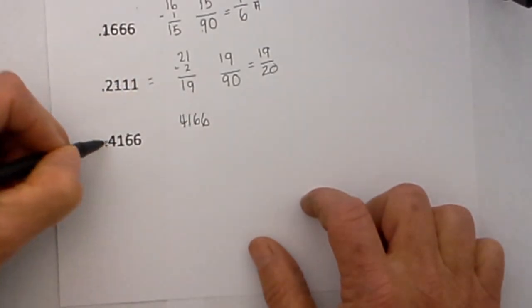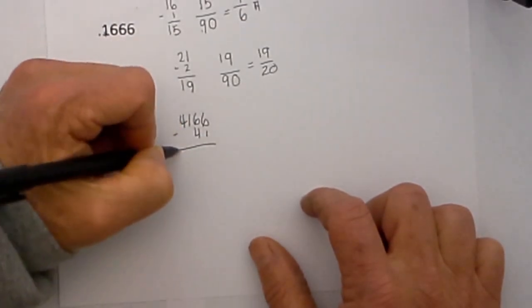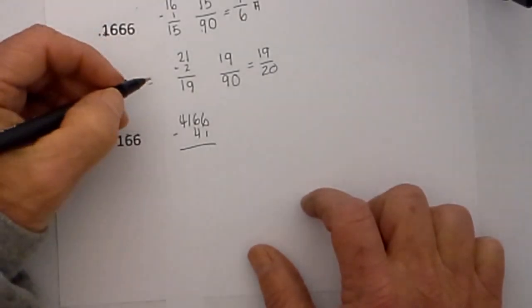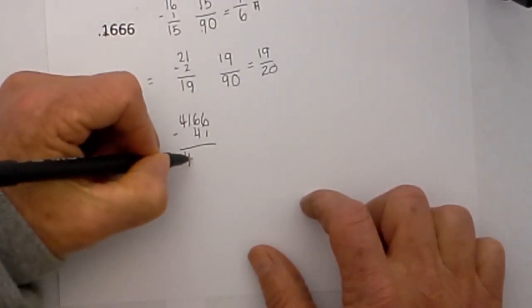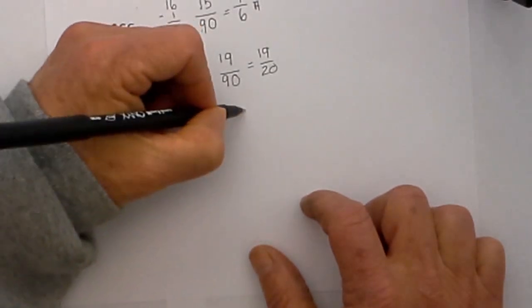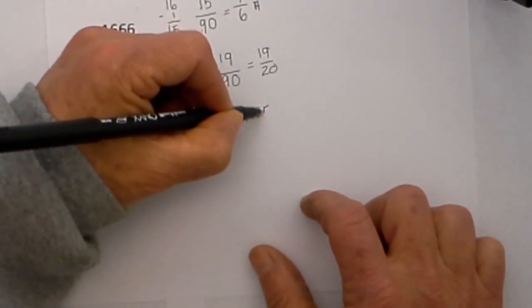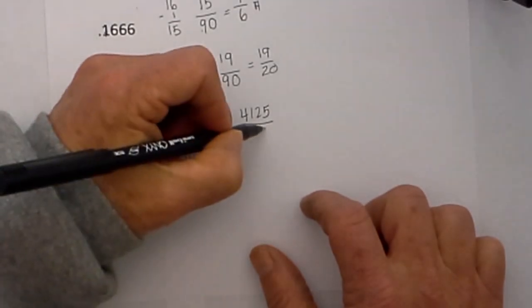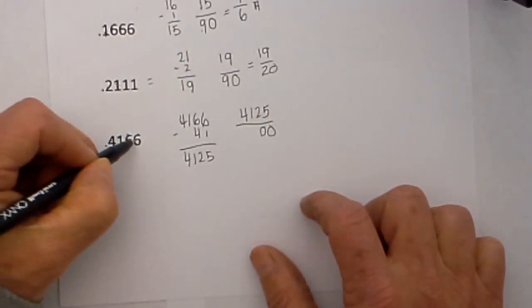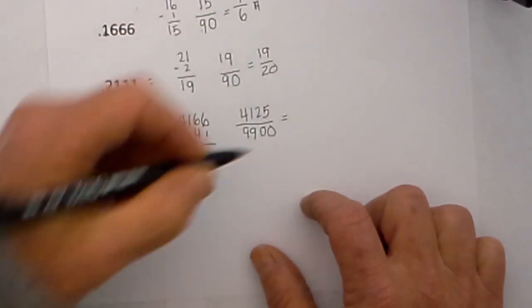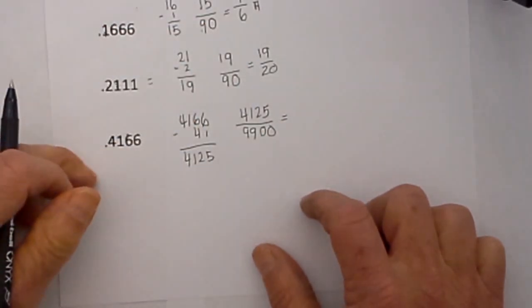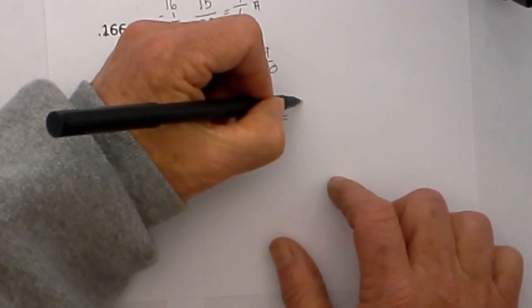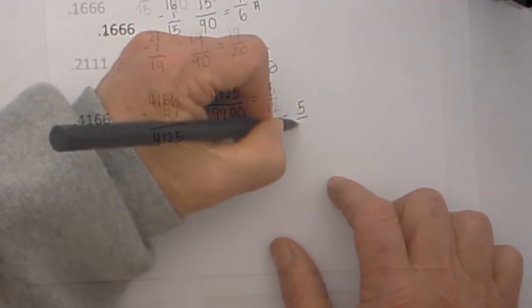And then from there it would be 4166 minus 41 and 4166 minus 41 is equal to 4125. And then we have two non-repeating so that would be 00, 2 repeating and then guys I did cheat. I put this into a reducer and that will believe it or not reduce down to 5 twelfths.